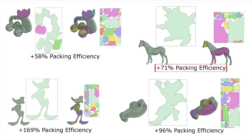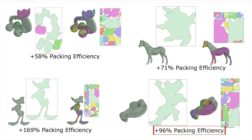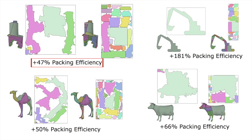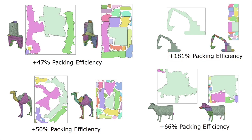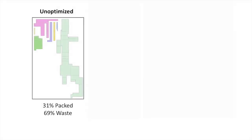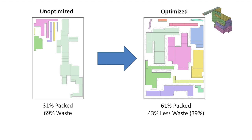On average, our method improves the packing efficiency by 68% when the boundary elongation is constrained to be 50%, and by 74% when constrained to be 100%. We used our method to generate efficiently packed layouts for fabrication of 3D objects from paper, validating its applicability for fabrication setups.